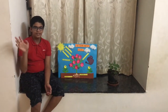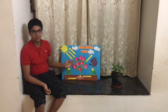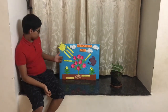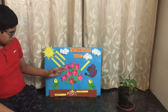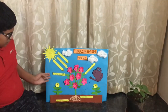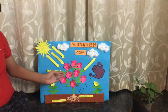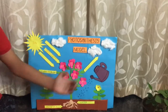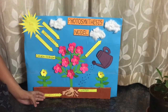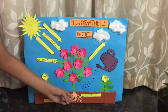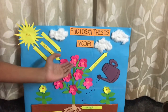Hi friends! Today I am going to talk about the photosynthesis model. The sun gives out light to the plants, the plants breathe in carbon dioxide and breathe out oxygen, and in the roots there are minerals and water that are absorbed by the roots to the plants.